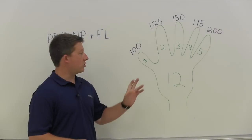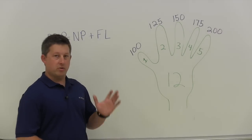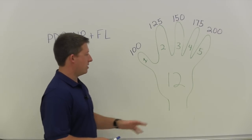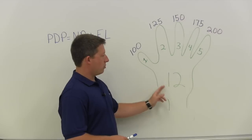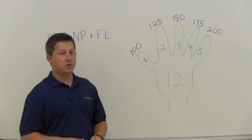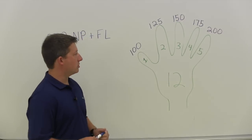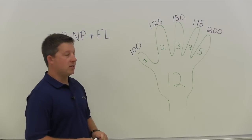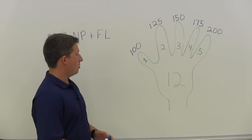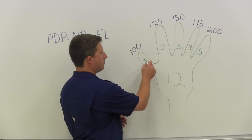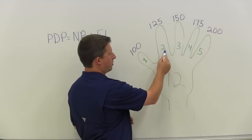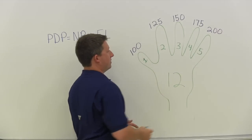So let's get started with the hand method. What you're going to do is imagine your hand — left hand or right hand, it doesn't matter — and you're going to put the number 12 in the center of your palm. This is for inch and three-quarter hose and it's going to be friction loss per 100 feet. On your thumb you'll have one, then going along your fingers you're going to have number two, three, four, and five.